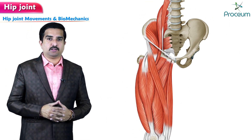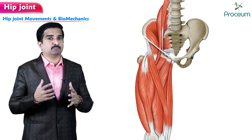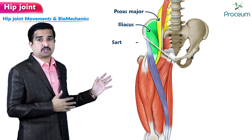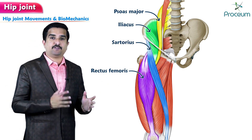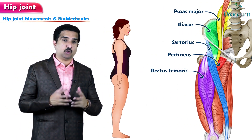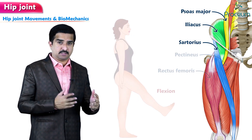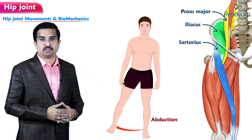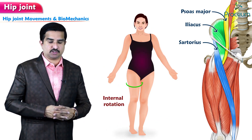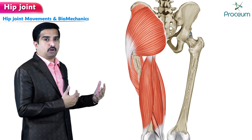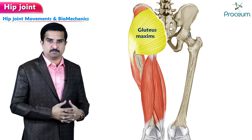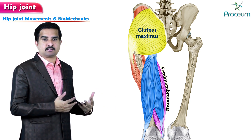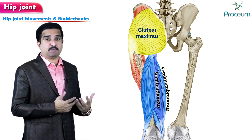Let us focus on the muscles involved and the movements of the hip joint. The psoas major, iliacus, sartorius, rectus femoris, and pectineus allow for flexion, while the psoas major, iliacus, and sartorius also aid in abduction and internal rotation. The gluteus maximus and hamstring muscles — including semimembranosus, semitendinosus, and biceps femoris — are responsible for extension of the hip joint.